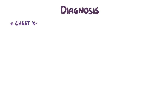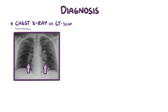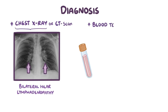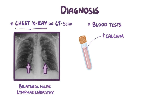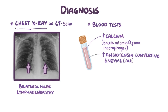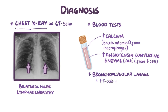A diagnosis of sarcoidosis usually involves a chest x-ray or CT scan of the chest to look for bilateral hilar lymphadenopathy. In blood tests, individuals typically also have an increased level of calcium, which is caused by excess vitamin D produced by macrophages. There's also usually an increased level of angiotensin converting enzyme, or ACE, which is produced by T cells. Another helpful clue, using bronchoalveolar lavage, is finding elevated levels of T cells in the lungs.